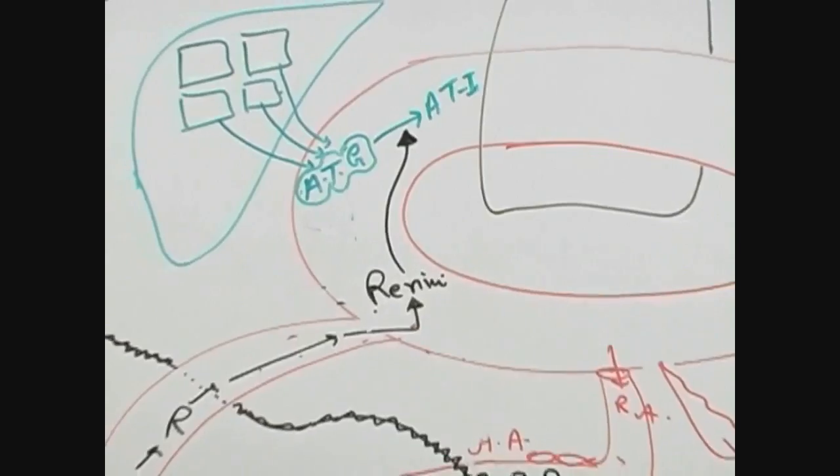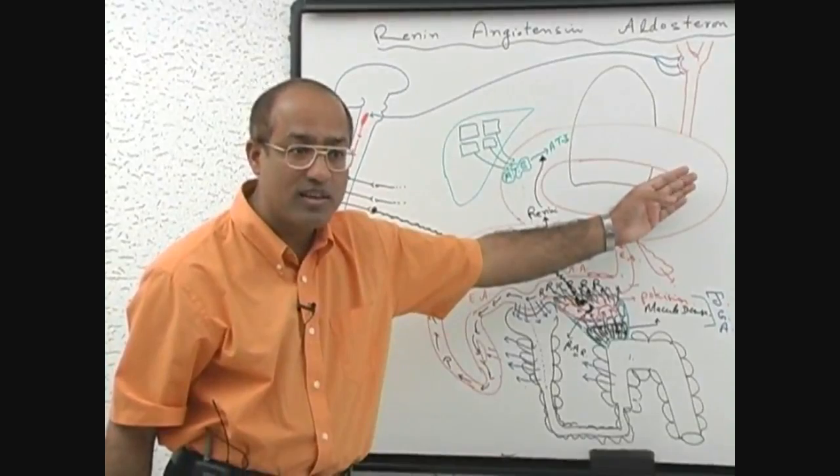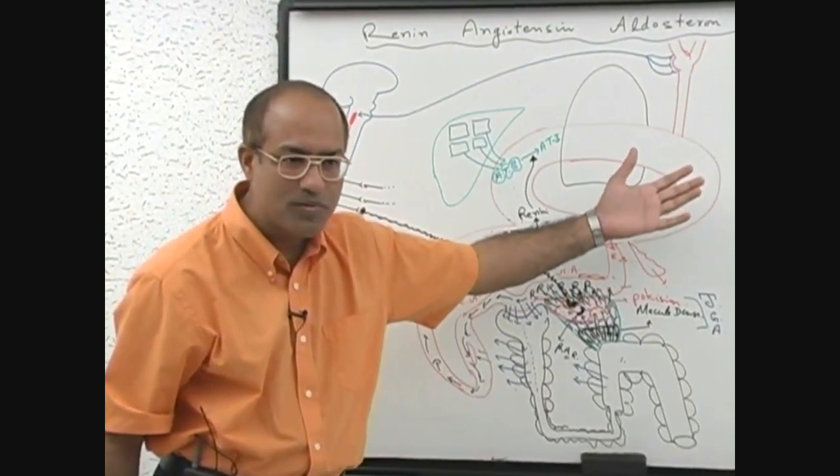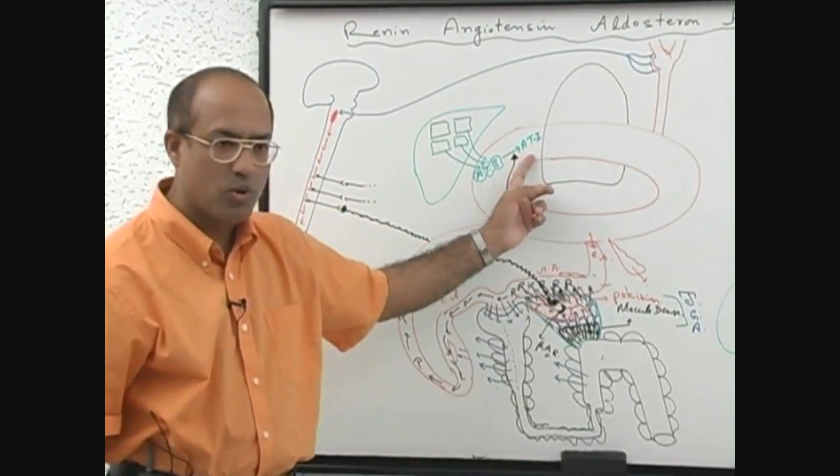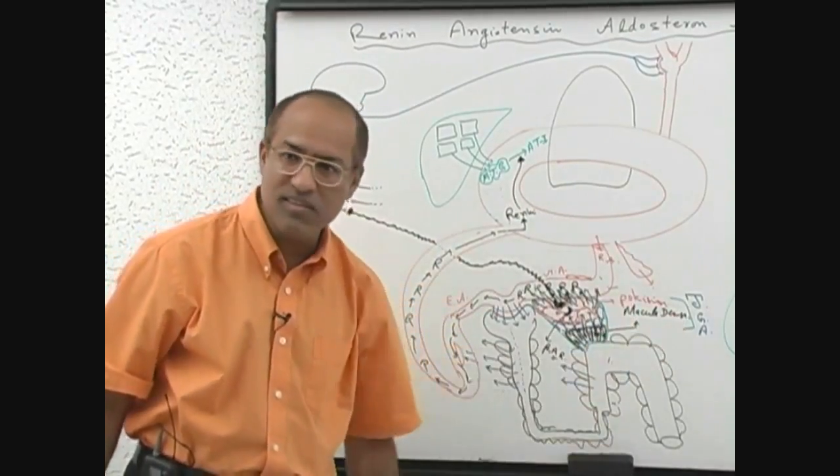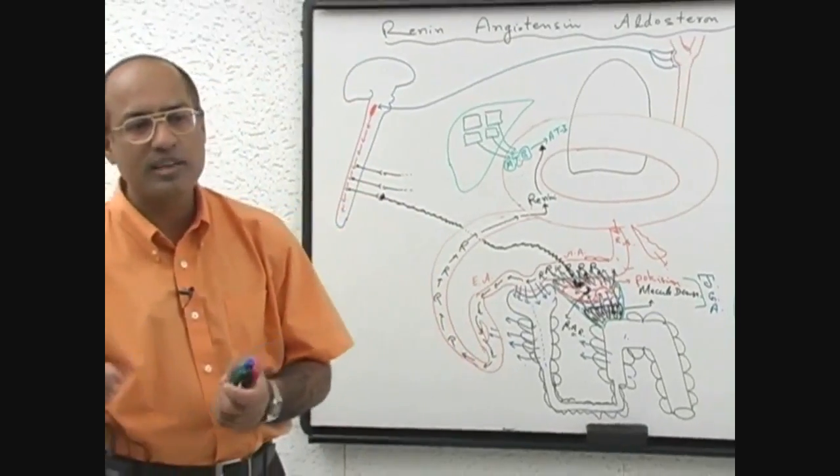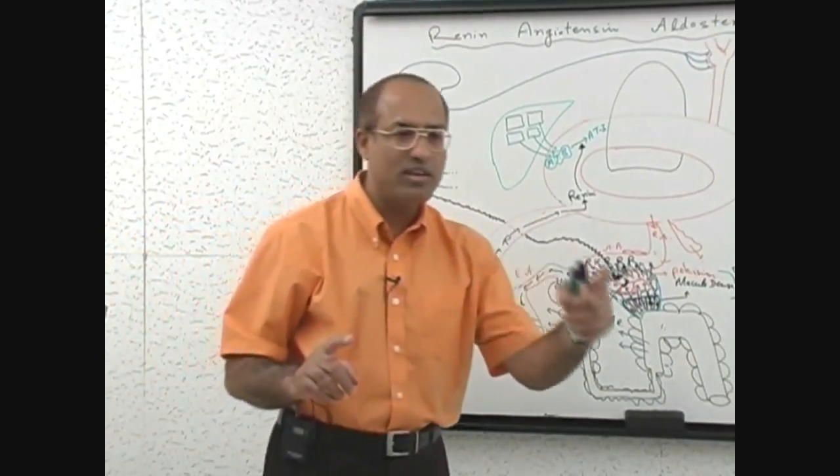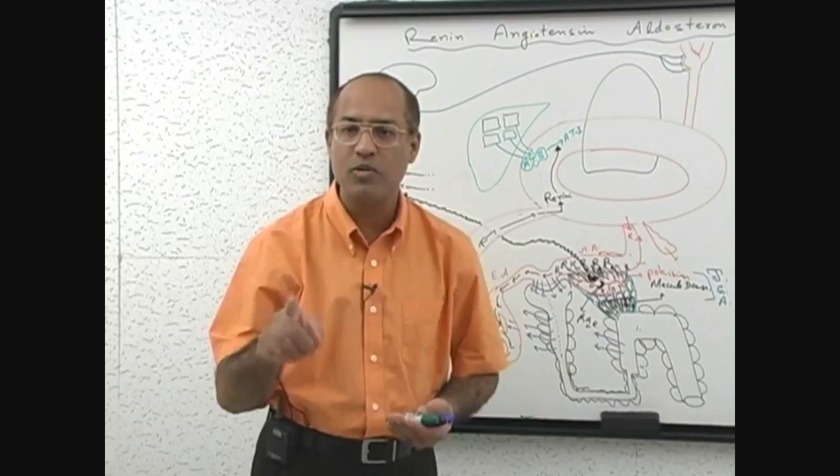All of you know that when angiotensin-1 passes through the lungs, it converts into angiotensin-2. When angiotensin-1 is passing through the lungs, it converts into angiotensin-2. It means in the lungs there should be some enzyme which converts angiotensin-1 into angiotensin-2, and that enzyme is called angiotensin-converting enzyme.